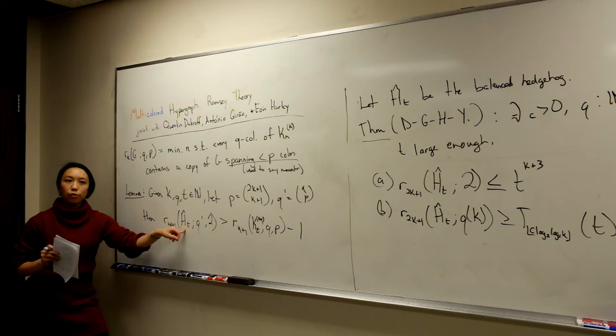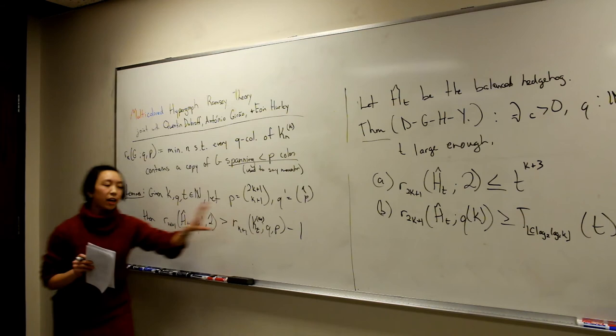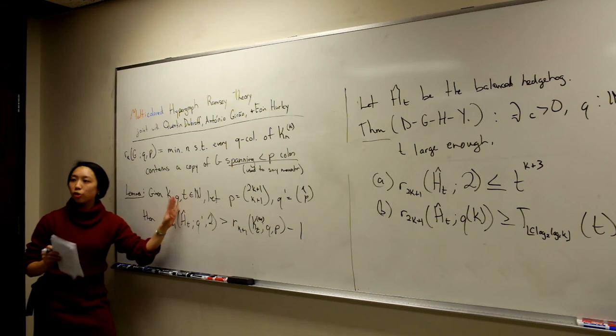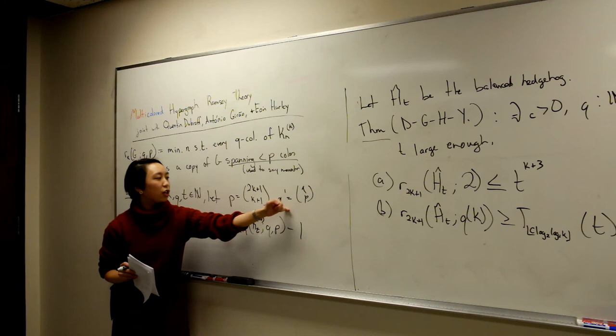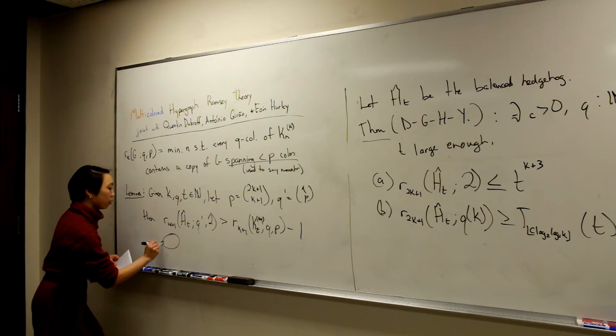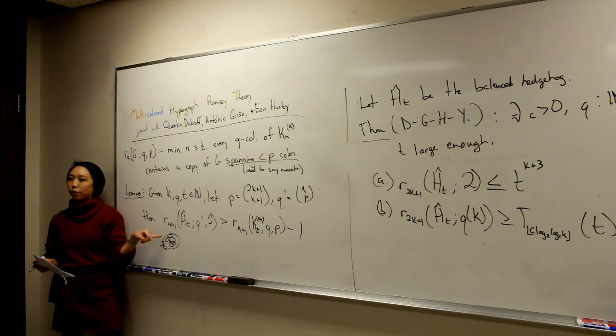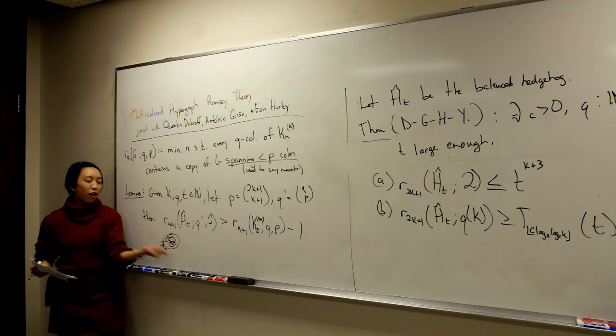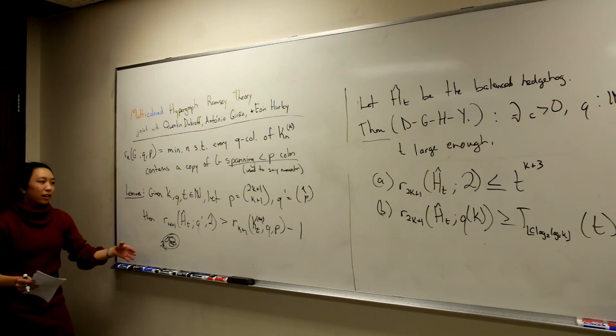The way to do this: I take an edge in the 2K+1 uniform case, look at all the K+1 edges inside it — they all have colors — take the union of all those colors as a set, and call that set a color. I can use the properties of the clique coloring to show the desired properties of the hedgehog coloring. I won't bore you with the technical details here.